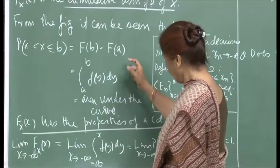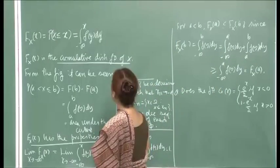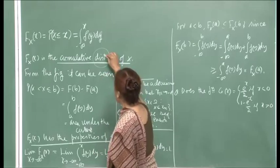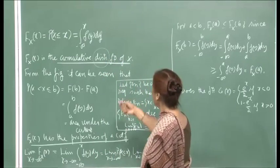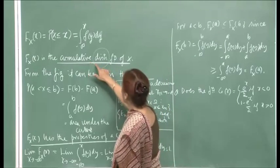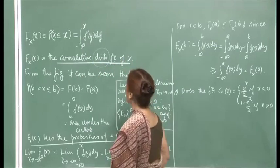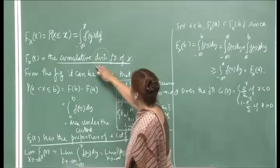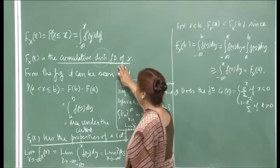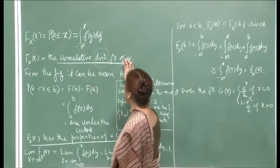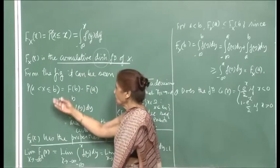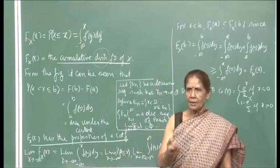For a continuous random variable, we measure probability on an interval. The cumulative distribution function for discrete was a summation, and here it is an integral. We want to check that F(x) has the properties of a CDF. The first thing to check is that the limit of F(x) as x goes to minus infinity is 0. This is immediate because as x goes to plus infinity, the integral from minus infinity to infinity of f(y) dy equals 1, since f is a probability density function.